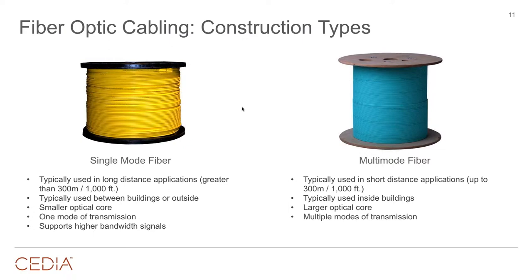There are two main types of fiber: single mode and multi-mode. The difference is the size of the glass core. Single mode has a much smaller core, which keeps optical waves tighter together, allowing longer distances. You see single mode used to connect buildings — it's what they pull outside for fiber to the home. Multi-mode has a bigger core, costs a little more for the cable but the electronics are less expensive. Most people pull multi-mode inside the home — up to 1,000 feet, use multi-mode; over 1,000 feet, use single mode.